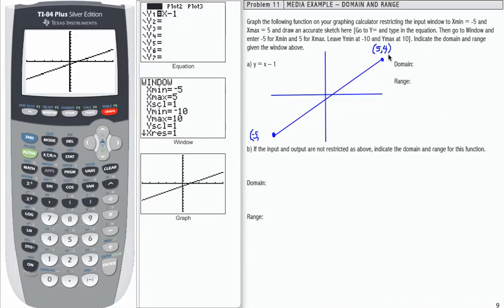Same thing for the minimum value. If the minimum value of x is negative 5, negative 5 minus 1 is negative 6. So I can identify the coordinates of the ordered pair here.